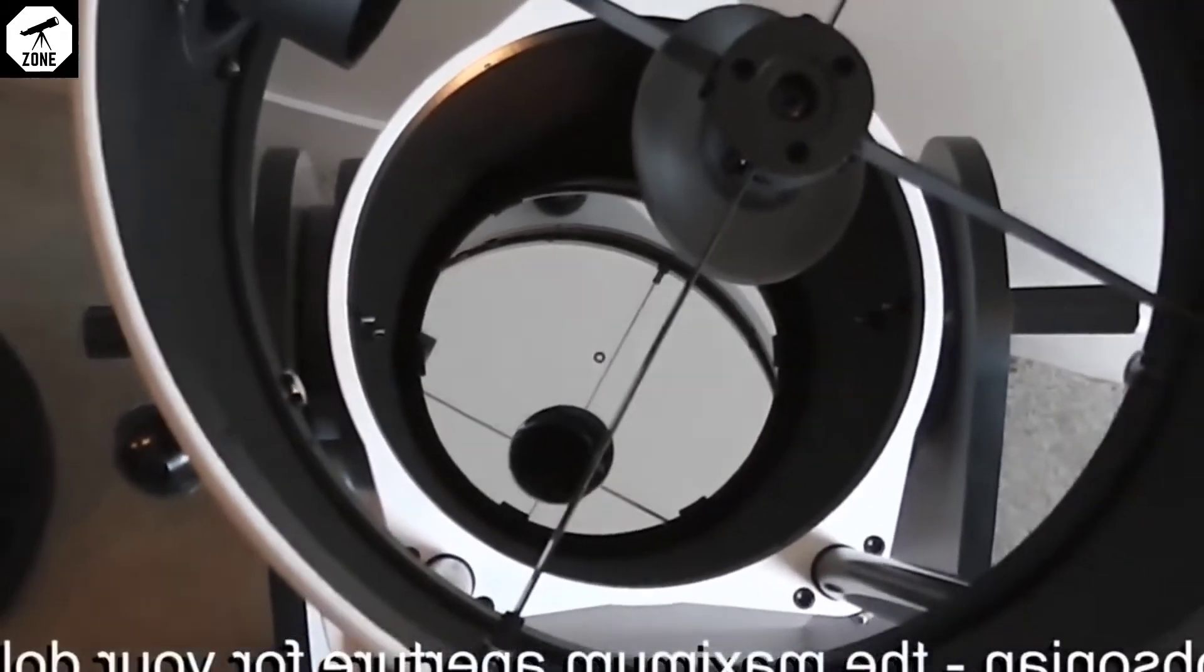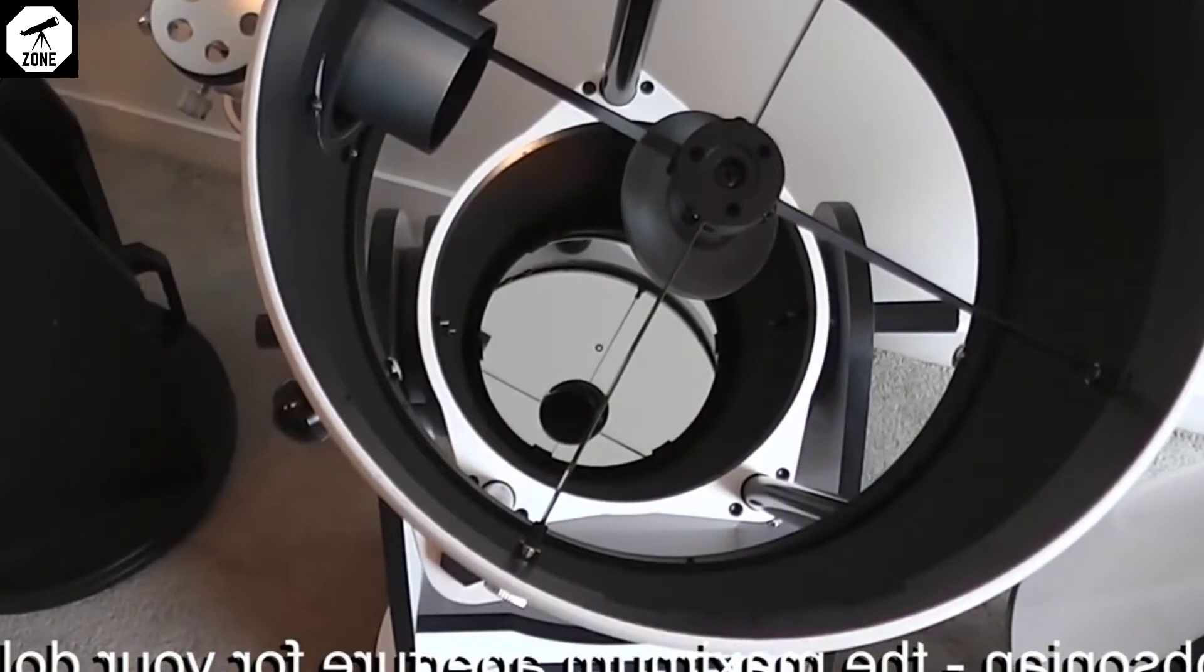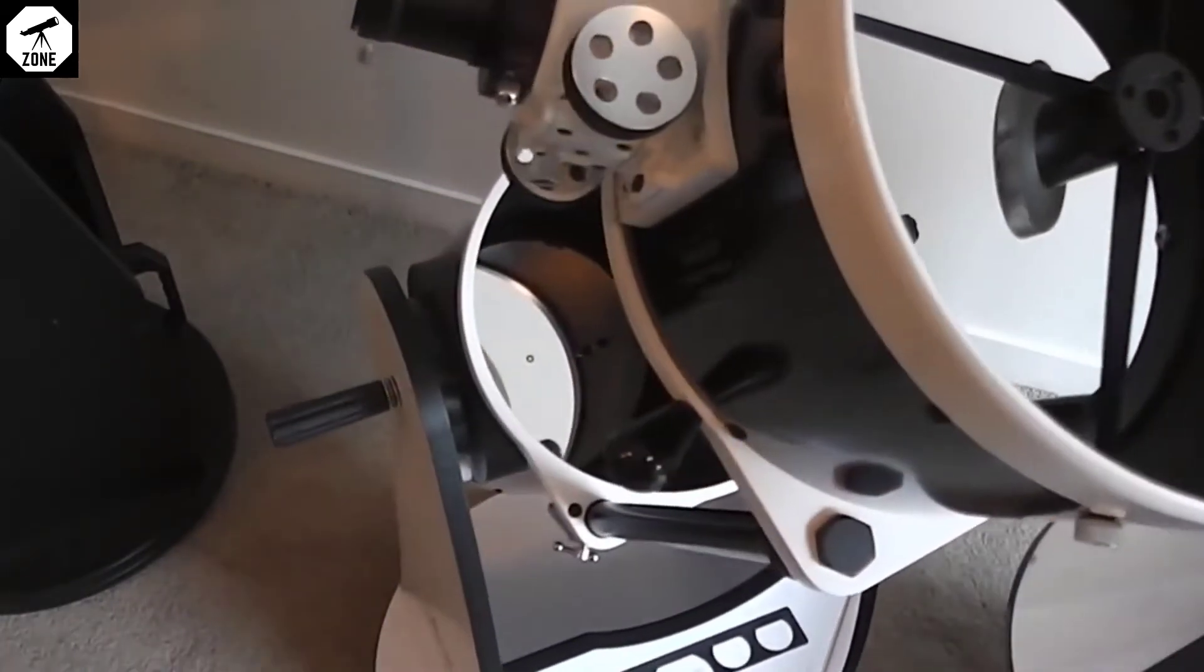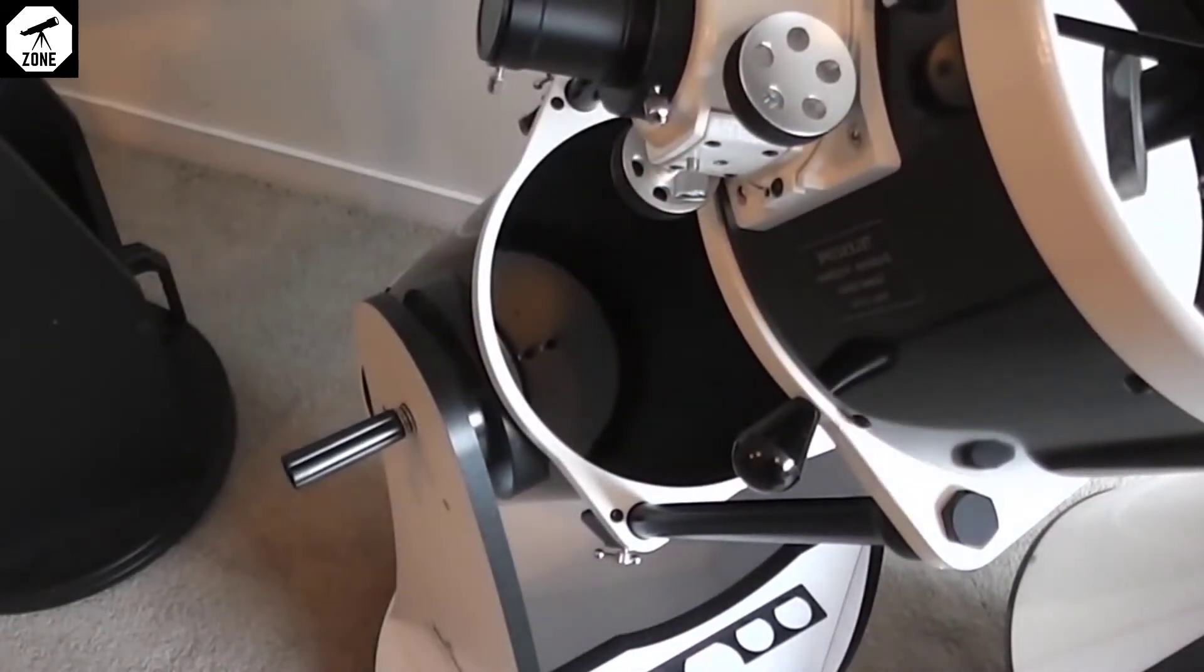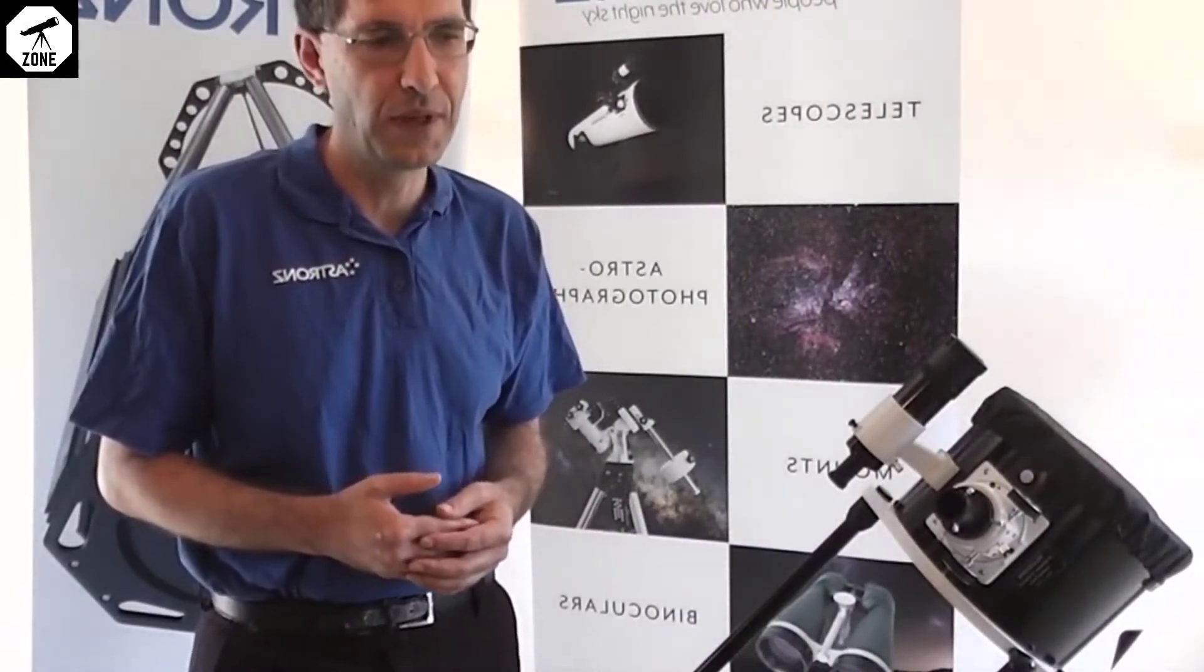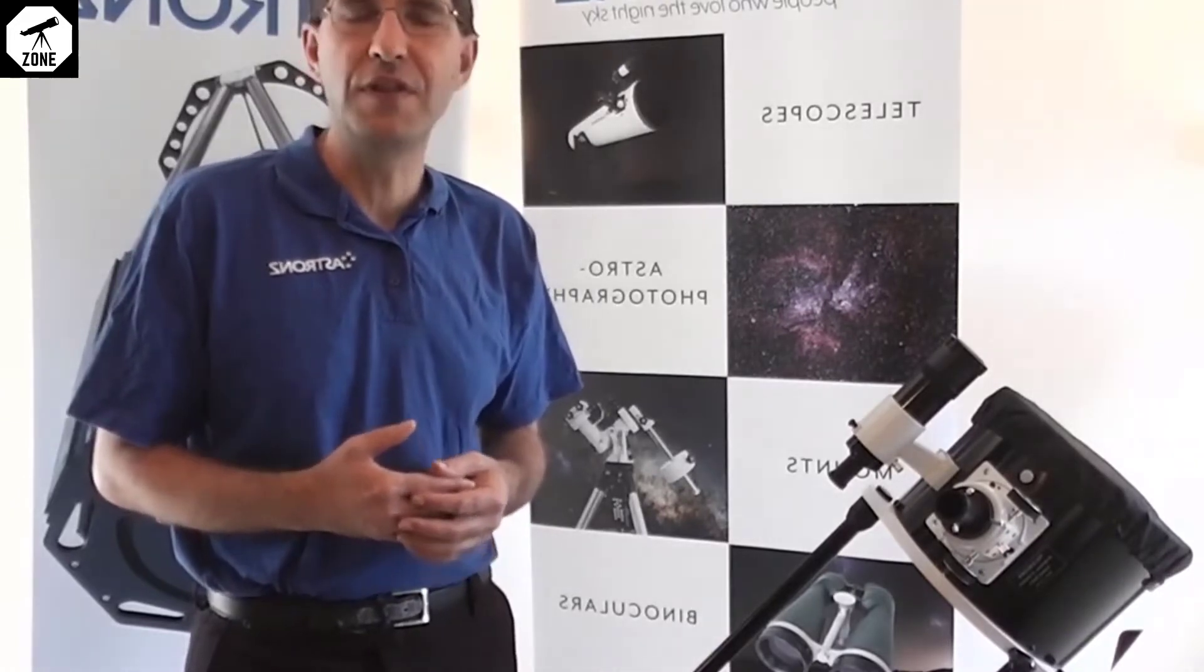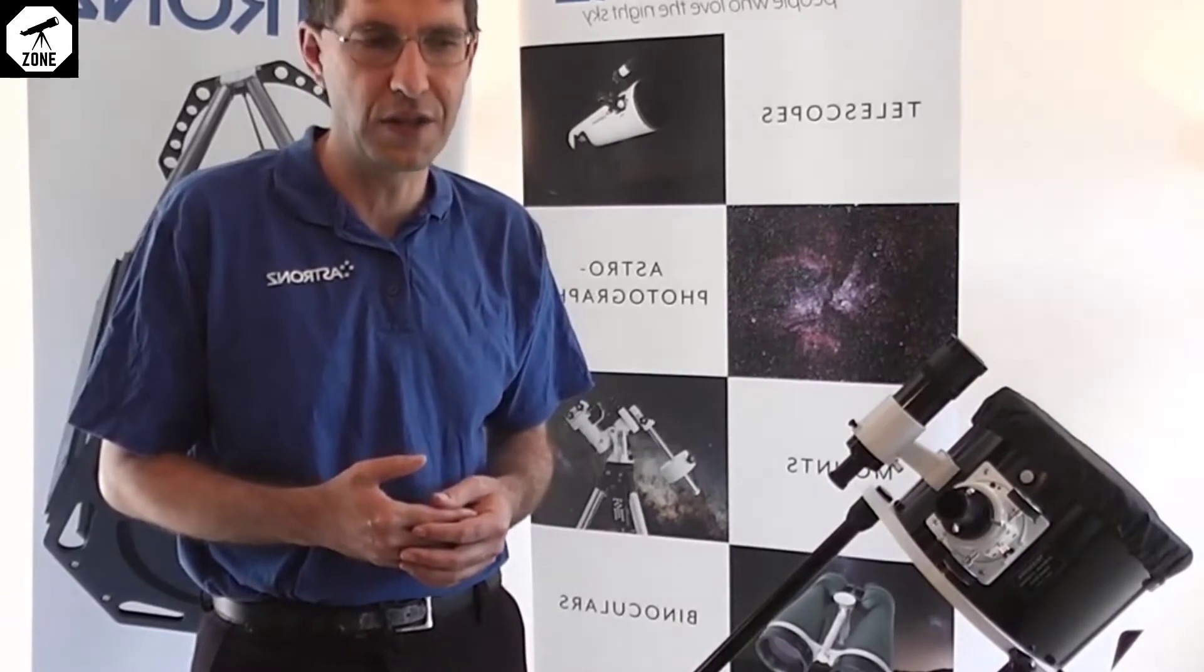The Dobsonian provides you with the maximum aperture for your dollar with the money going into the optics rather than the fancy mount that you may not really need. But the telescope is all manual. There is nothing automatically finding objects and tracking them for you. You are the computer and the motor driving it. However, this encourages you to learn the night sky and to have fun browsing the sky.